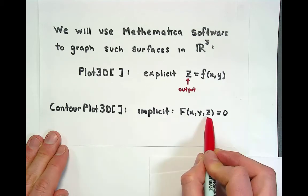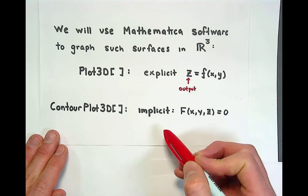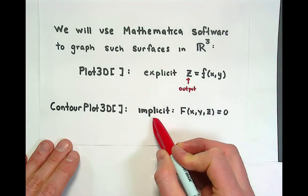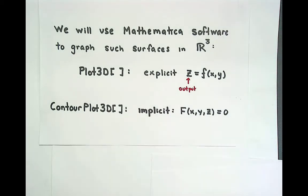If not, if I cannot get z in terms of x and y or if I just don't feel like doing the extra work then we would call it an implicit equation and we'll use the ContourPlot3D command. You will see examples of each of these as we go on in the lessons for quadratic surfaces.